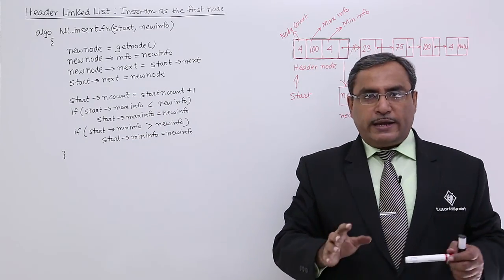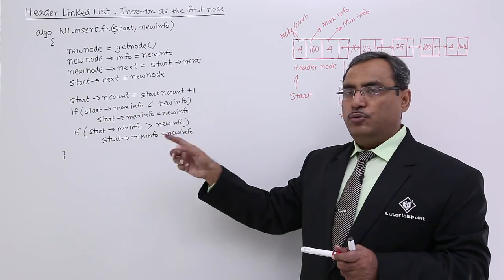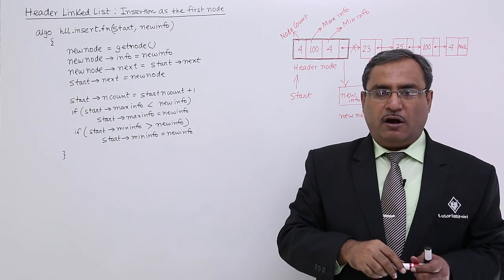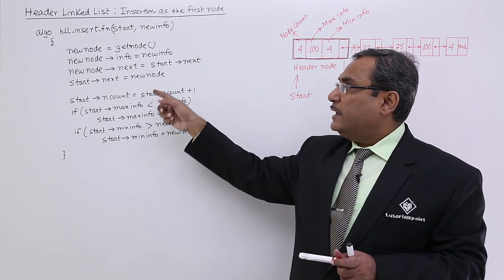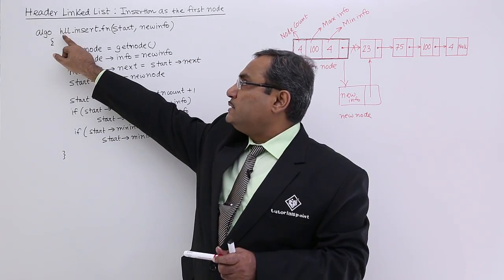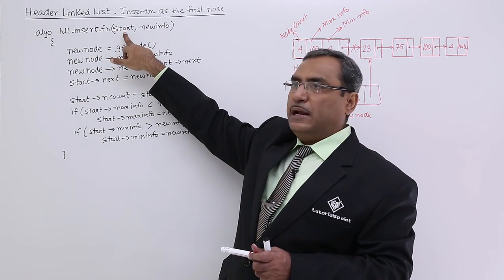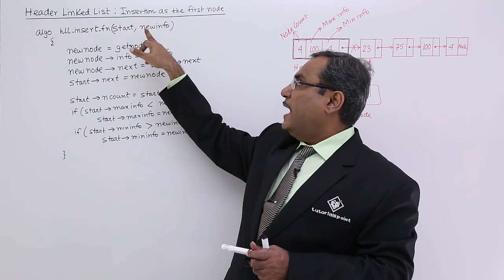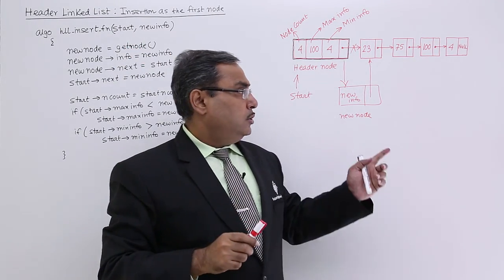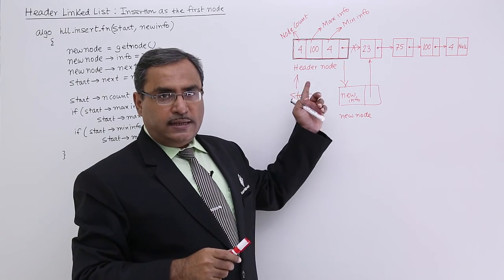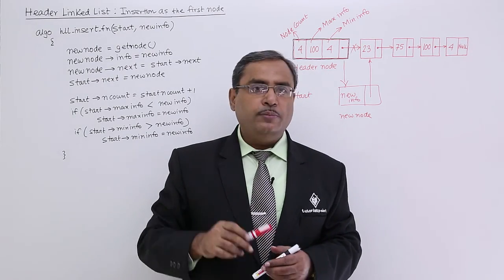So this sort of code we are writing new in this particular header linked list. So this sort of code we did not write while we did the insertion of a new node into an ordinary linked list. So this is my algorithm, so name of the algorithm is header linked list insert as first node, passing parameters as start and this parameter as new info. I think you are getting this logic. So I have done also the example, I have given one example how it is working here and in this way the algorithm will work.